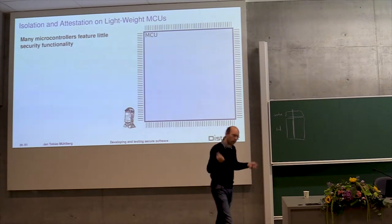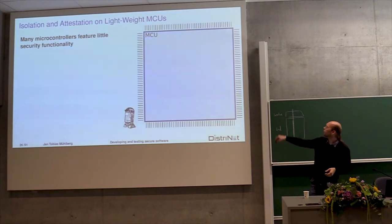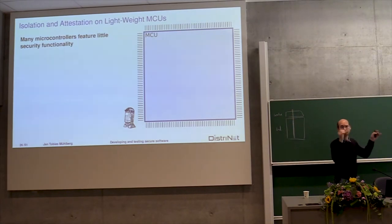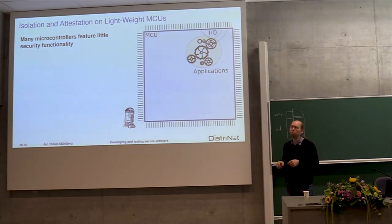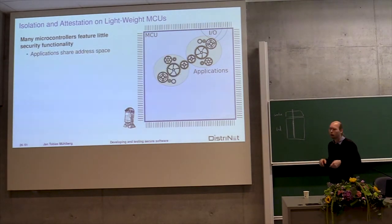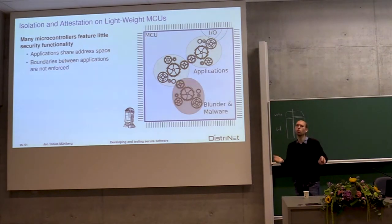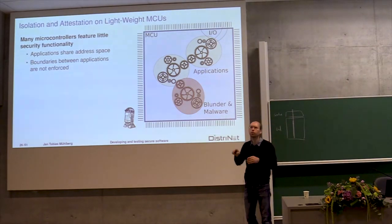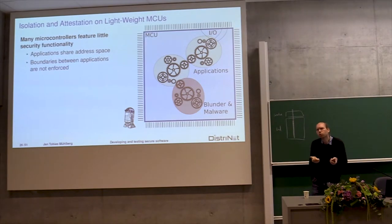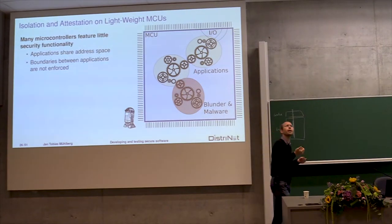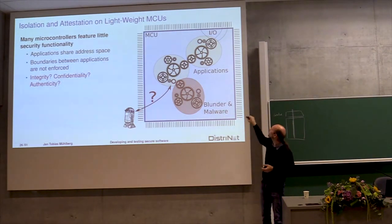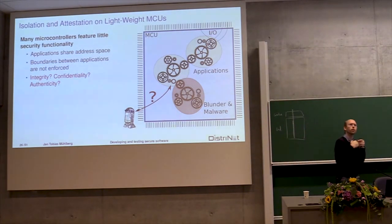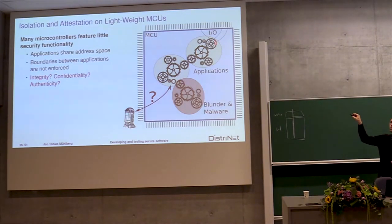I want to talk about remote attestation and how it actually works. Here you have a common microcontroller with a couple of pins and a remote party that wants to communicate with it. We install a piece of software on this microcontroller. We then install another application — still all working fine — then a third application, and it still looks as if it's working fine. However there is some overlap in memory, and since it's a microcontroller with probably no memory protection or memory management, it's pretty hard to implement isolation between these things.